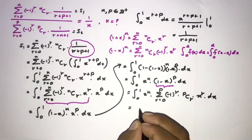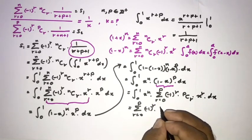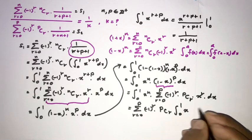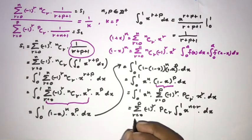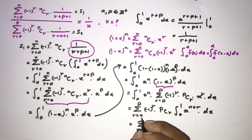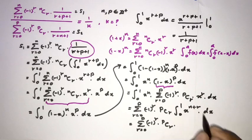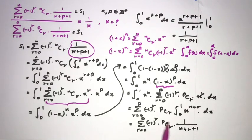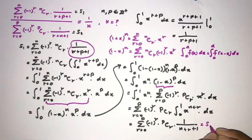Switching the integral sign and sigma notation again, we get the sum from r equals 0 to p of minus 1 to the r times p choose r, multiplied by the integral from 0 to 1 of x to the n plus r dx. Evaluating the integral gives 1 over n plus r plus 1 for each term.